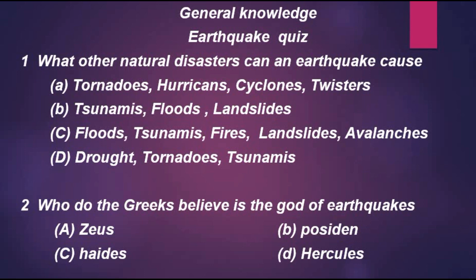Question 1: What other natural disaster can an earthquake cause? Option A: tornado, hurricanes, cyclones, twisters. Option B: tsunamis, floods, landslides. Option C: floods, tsunamis, fires, landslides, avalanches. Option D: droughts, tornado, and tsunamis. The correct answer is option C.